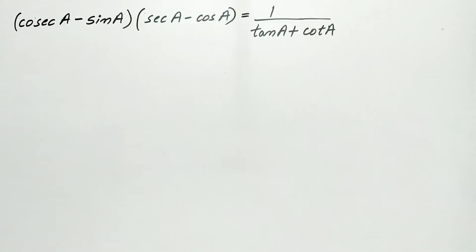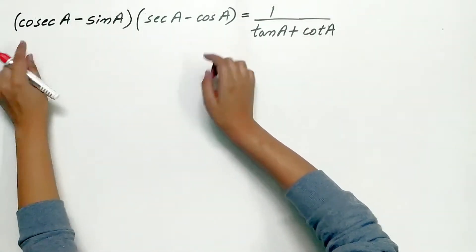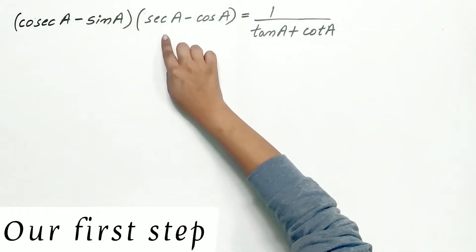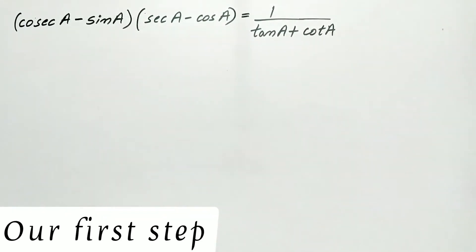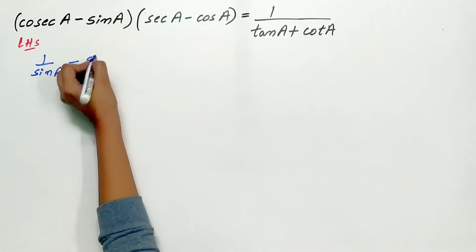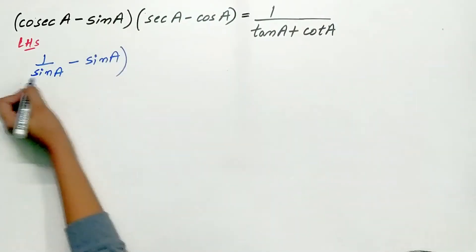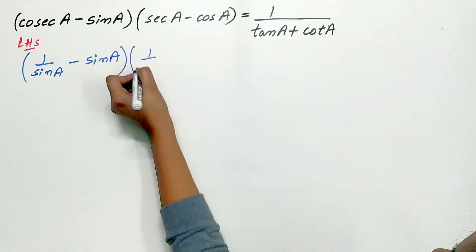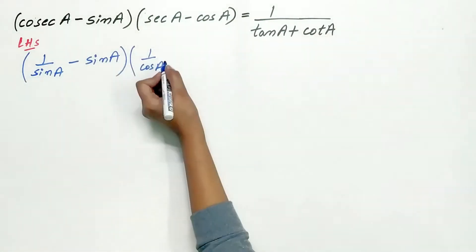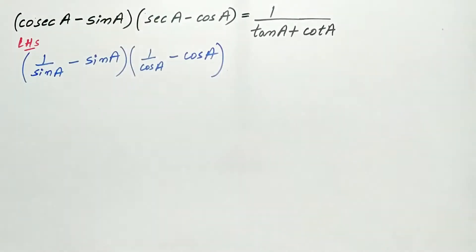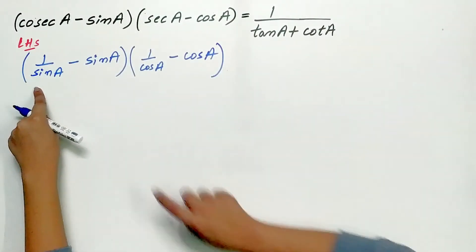Let's prove the identity. Look at the expression on the left hand side. We will express cosec A and sec A in terms of sine and cos A respectively. That will be our first step. Cosec A is 1 by sin A, and sec A is 1 by cos A.